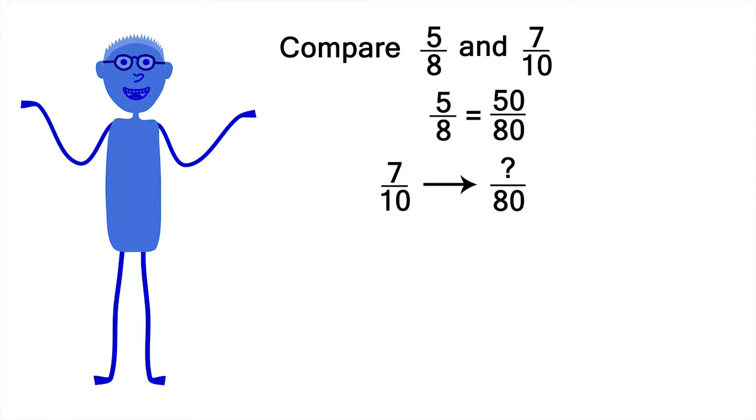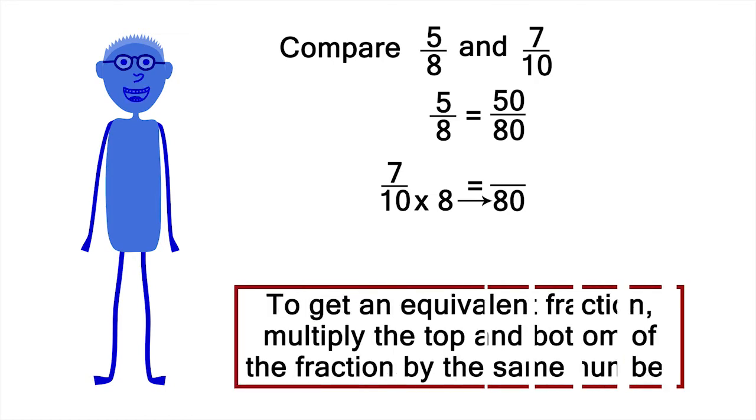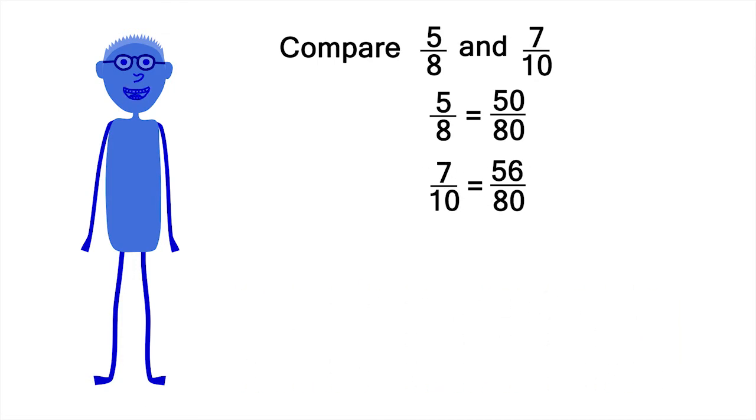Let's convert 7 tenths to an equivalent fraction, with eightieths as a denominator, by the same method. What do you have to multiply 10 by to get 80? Eight. To get an equivalent fraction, whatever you multiply the bottom half of the fraction by, you also have to multiply the top half of the fraction by. 7 times 8 is 56. So 7 tenths and 56 eightieths are equivalent fractions.